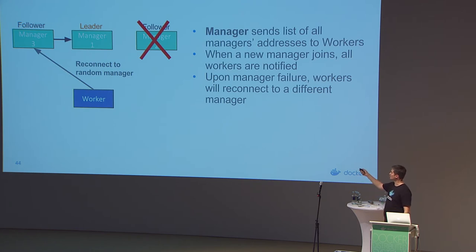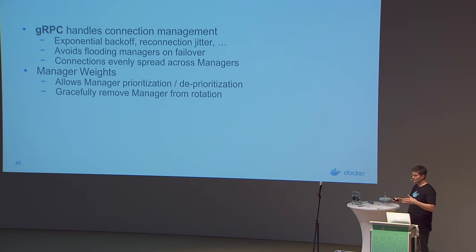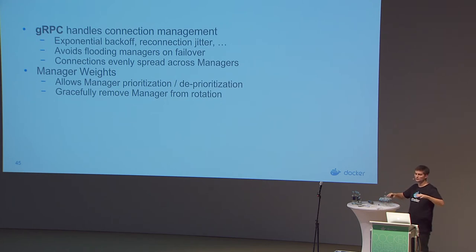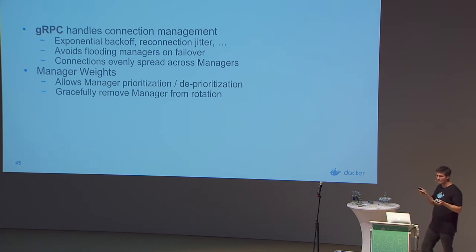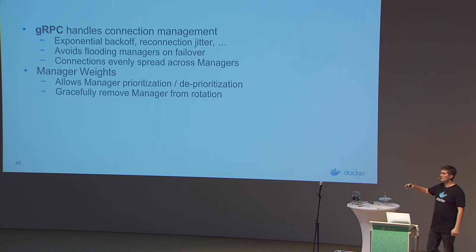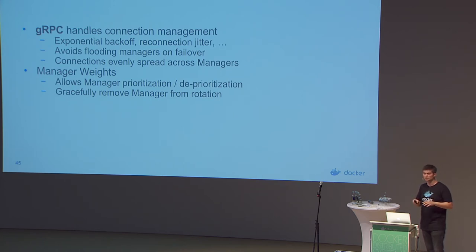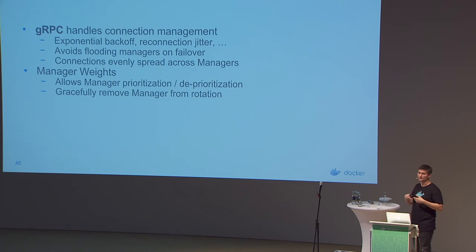We try to avoid reconnecting thousands of connections to the same failed machine, so we spread connections over time. gRPC helps a lot with exponential backoff and reconnection jitter. We also have manager weights — every server in a cluster has a weight as a preference. Right now they're weighted the same, but it allows us to prioritize one or gracefully shut down servers by reducing preference so clients automatically reconnect to different machines.